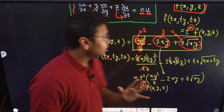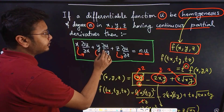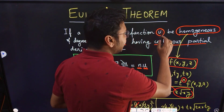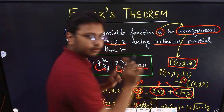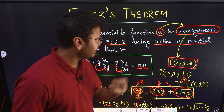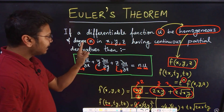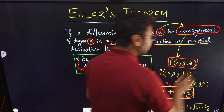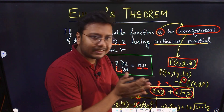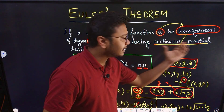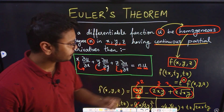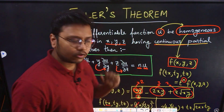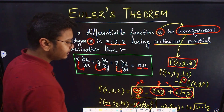Coming back to Euler's theorem: the function we are dealing with must be homogeneous. We also need to make sure it has continuous partial derivatives. Questions will be given to you such that the function definitely has continuous partial derivatives, so then this relation can be utilized.